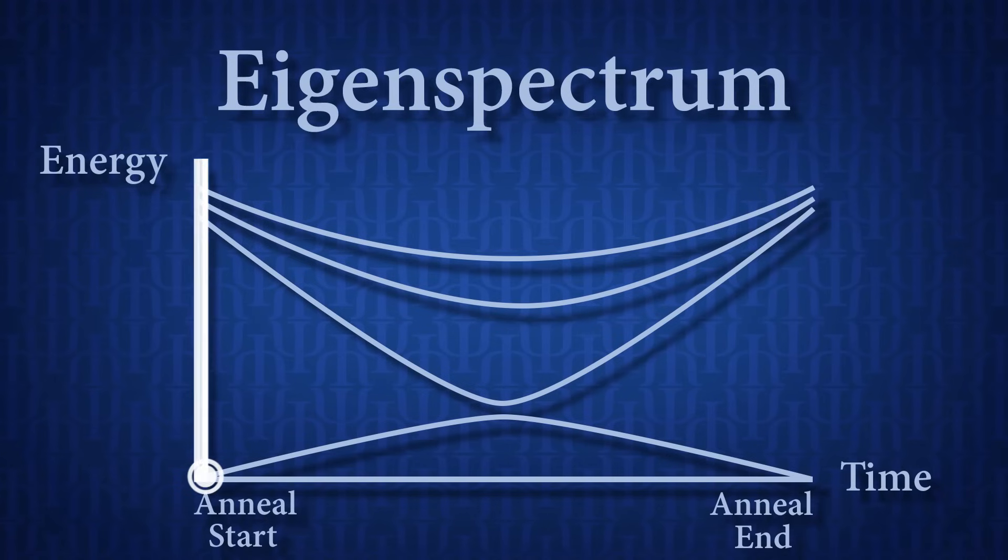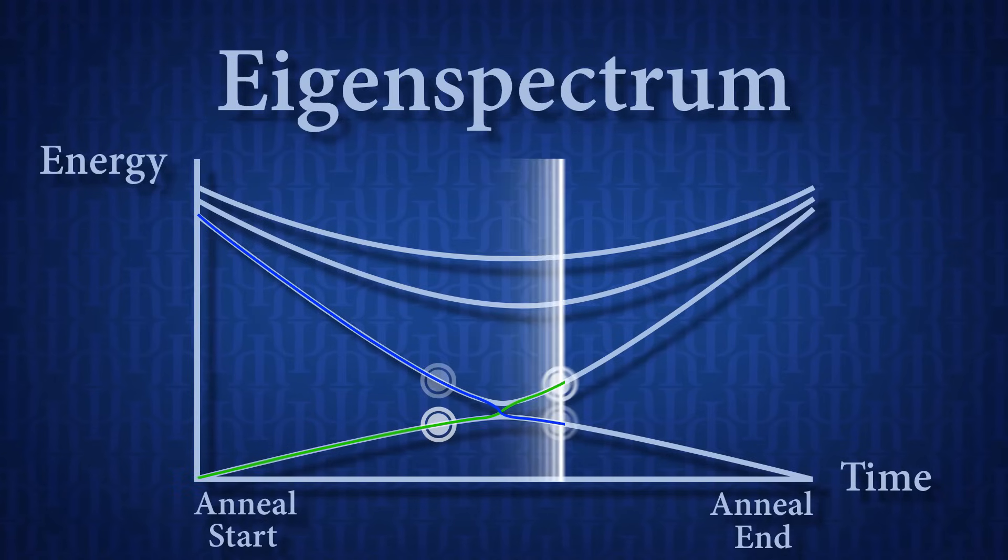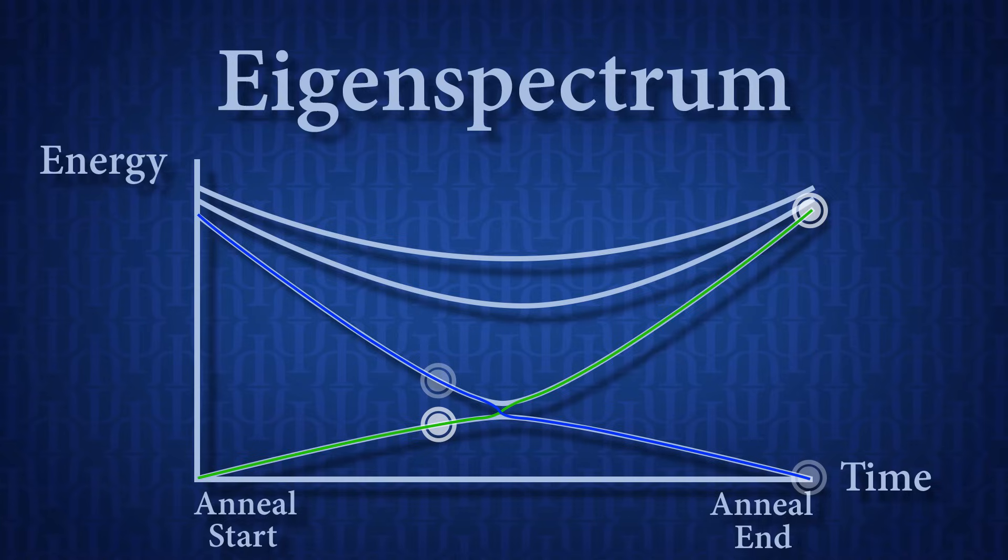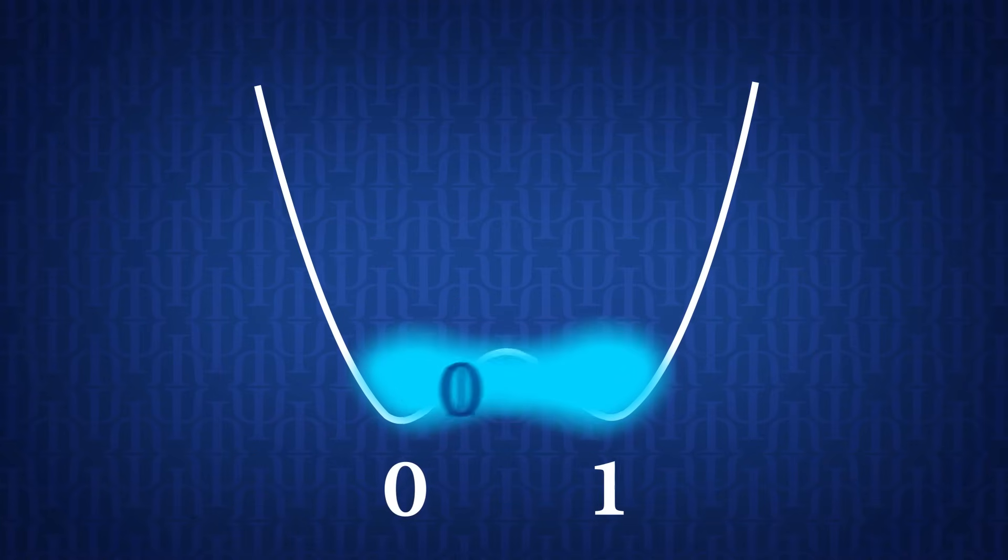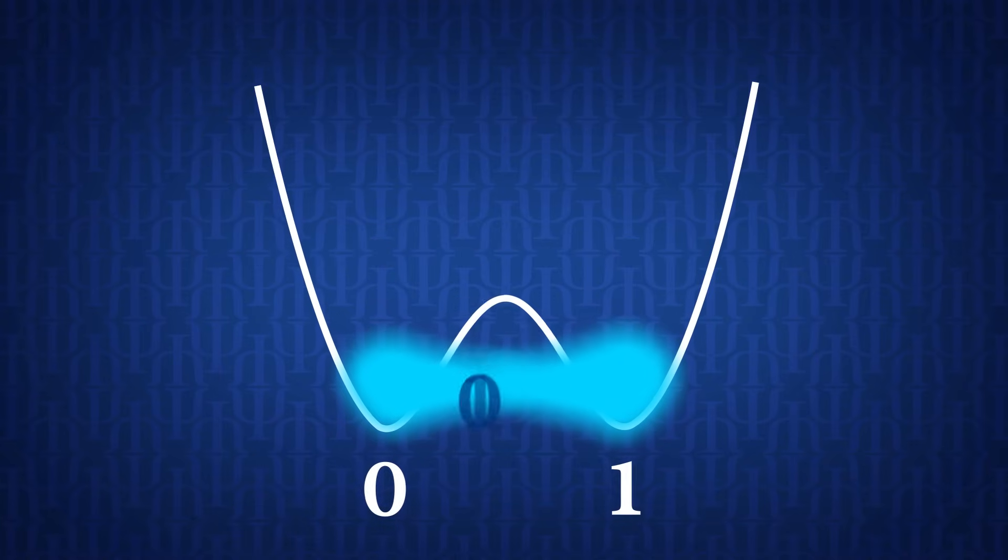So how can we be sure that our quantum annealers are actually using quantum physics to solve problems? Now this isn't a simple question to answer because we don't have direct access to measure the quantum physics in our system. The only information we get from the system is from the final states of the qubits and these final states are all classical states not quantum states.